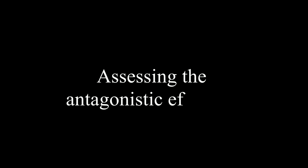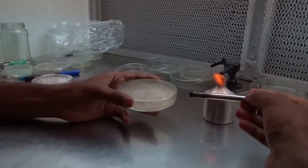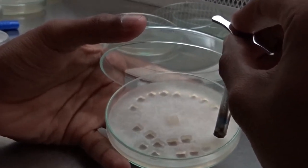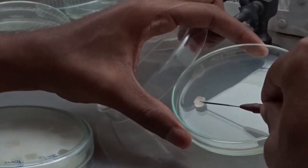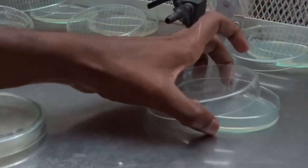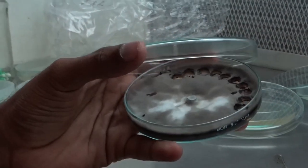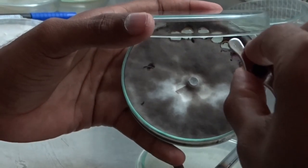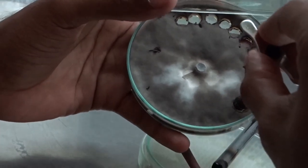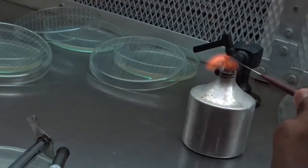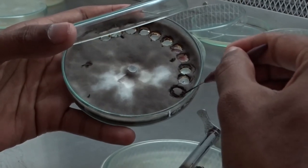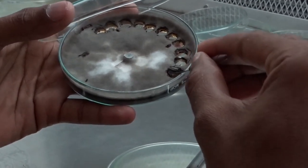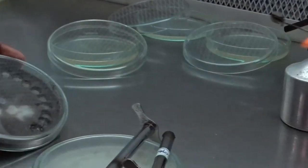Assessing the antagonistic efficacy using the dual plate technique. Make an 8 mm mycelial disc of Macrophomina using a sterile cork borer. Place the mycelial disc of Macrophomina at one side of the petri plate, 1 cm away from the edge of the plate.